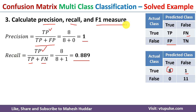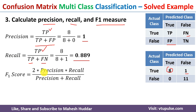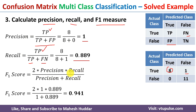The F1 score, also known as F1 measure, is equivalent to 2 × precision × recall / (precision + recall). We have already calculated precision and recall, so putting the values in: F1 score = 2 × 1 × 0.889 / (1 + 0.889) = 0.941.